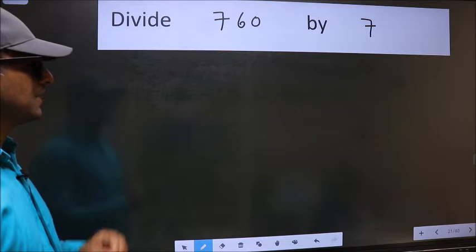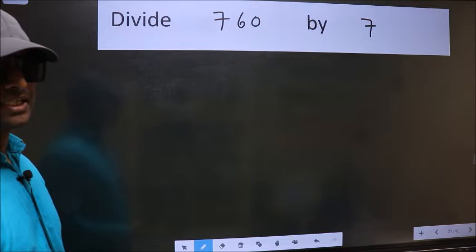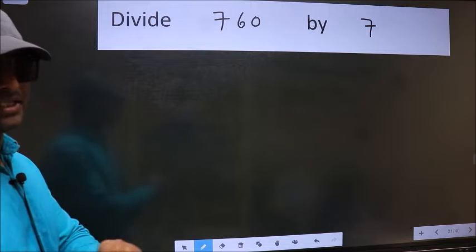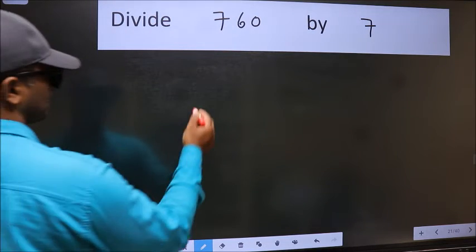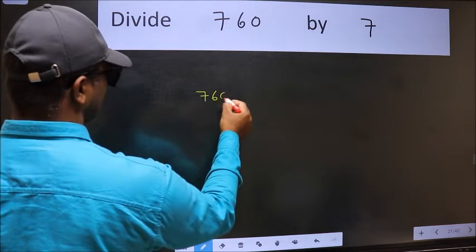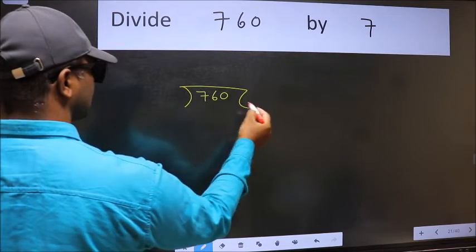Divide 760 by 7. To do this division, we should frame it in this way: 760 here and 7 here.